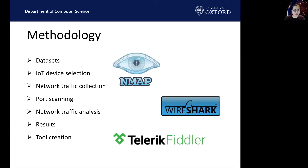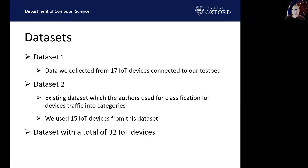We now give a detailed breakdown of our methodology. For experiments, we used network traffic obtained from two sources for our datasets. Dataset one was network traffic collected from 17 IoT devices connected to our test bed. Dataset two was an existing dataset created by previous research, where the authors used their dataset to classify IoT device traffic into various categories using machine learning, such as whether it was a light bulb or home assistant.